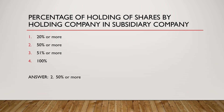Question: Percentage of holding of shares by a holding company in a subsidiary company. Any company that holds 50 percent or more of shares in another company is called a holding company, and the company whose shares are held is the subsidiary company. The four options are: 20 percent or more, 50 percent or more, 51 percent or more, and 100 percent. The answer is option two — 50 percent or more.